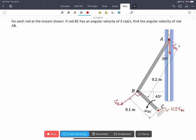So finding the IC, we've got VB, and we have to draw a line perpendicular to VB. And then we have to draw a line perpendicular to VA. And the point where they cross is the ICZV for AB.